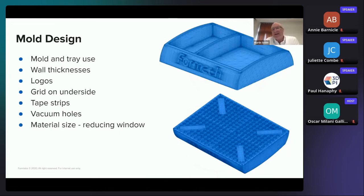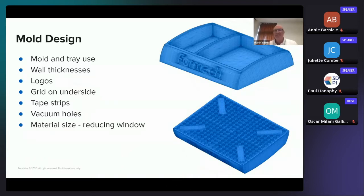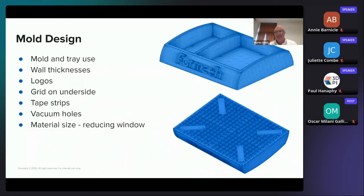The vacuum forming machine used has approximately a 620 × 646 mm forming area, but a reducing window was used to accommodate the smaller tool, reducing plastic sheet size, cost, and material wastage, and minimizing the risk of excess material building up as webs in the corners.